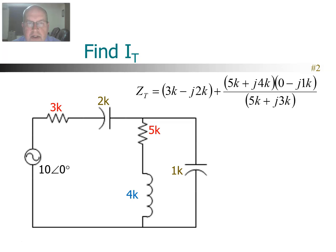The series components are the 3K resistor and the 2K capacitor. The resistor is real, the capacitor is a negative imaginary. That gives us 3K − j2K. Then that's added in series to two parallel branches, so we do product over sum. The first branch is a 5K resistor and a 4K inductor. Inductor is a positive imaginary, so it's 5K + j4K. The second branch is a capacitor, that would be a negative imaginary — write that as 0 − j1K.